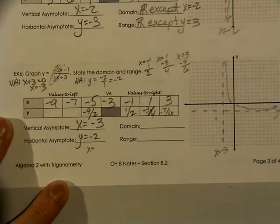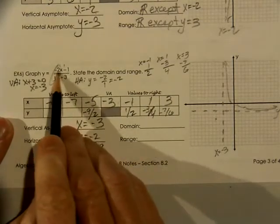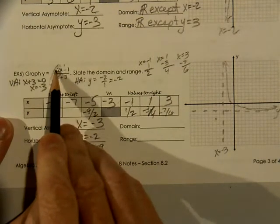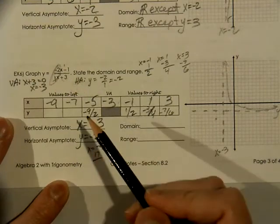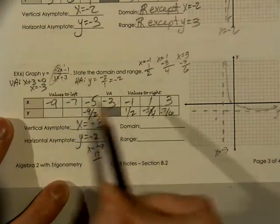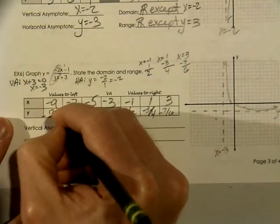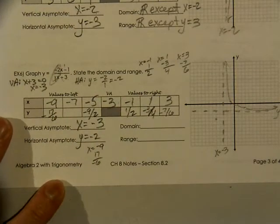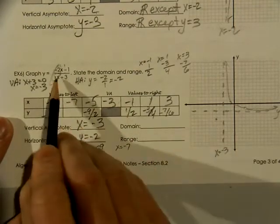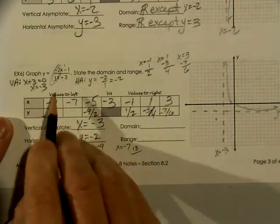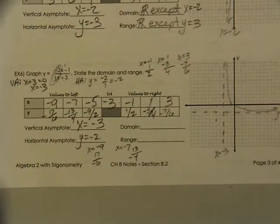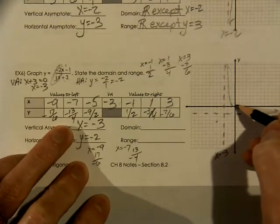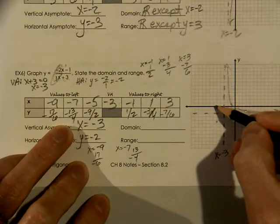You can put in any numbers you want as long as there are three on the left side. When x is negative nine, negative two times negative nine is eighteen, minus one is seventeen in the numerator, and negative nine plus three is negative six in the denominator, giving negative seventeen sixths — which is almost three. When x equals negative seven, fourteen minus one is thirteen in the numerator, and negative seven plus three is negative four in the denominator.